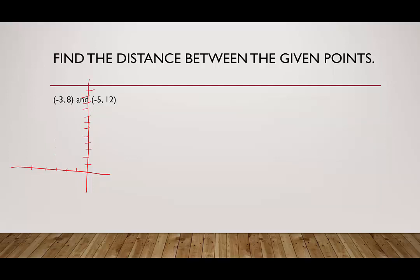So we have (−3, 8) and (−5, 12). This is the distance we're looking for. Creating a right triangle: the vertical distance from y = 8 to y = 12 is four, and the horizontal distance from x = −5 to x = −3 is two. Using the Pythagorean theorem: 4² + 2² = d², so d² = 16 + 4 = 20.